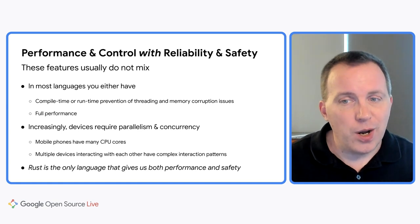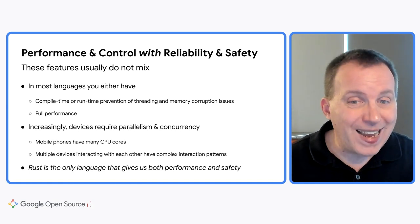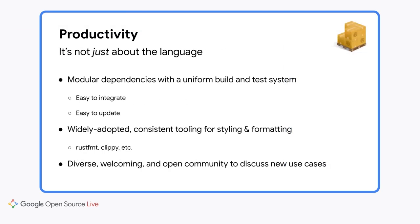Rust is the only language we know that gives us both the performance and the safety that we need. But of course, it's not just about the language itself. The code we write is often a small portion of the overall deliverable. In a system like Android, over three quarters of the source code — 75 million of the 100 million lines of code — are third-party ecosystem libraries that we rely on. And Rust makes it easy to integrate and update those dependencies, something we haven't really had with C or Java.